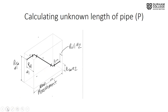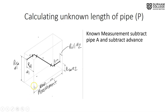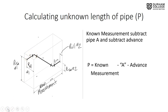Calculating the unknown length — pipe P: take the known wall-to-wall measurement at the bottom of the box, subtract the dimension for pipe A, and then subtract the advance. The advance and A are both part of the known overall measurement, so what remains after subtracting them is pipe P. Therefore: P equals the overall dimension minus pipe A minus the advance.